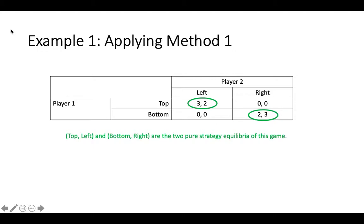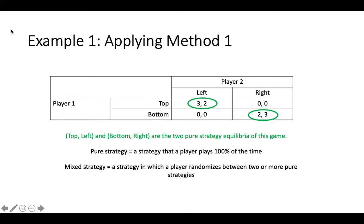At this point, it is appropriate to define what a pure strategy is. A pure strategy is a strategy that a player plays 100% of the time. Contrast this with a mixed strategy, which is a strategy in which a player randomly switches between two or more pure strategies. It turns out that this game has a mixed strategy Nash Equilibrium in which player one randomizes between top and bottom, and player two randomizes between left and right. We will learn how to solve for mixed strategy Nash Equilibria in another video.